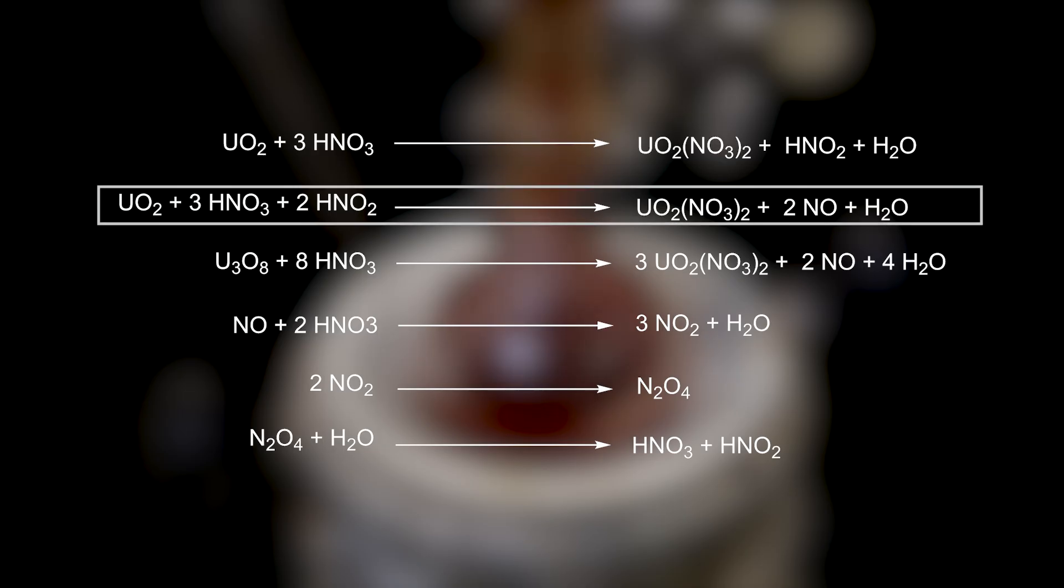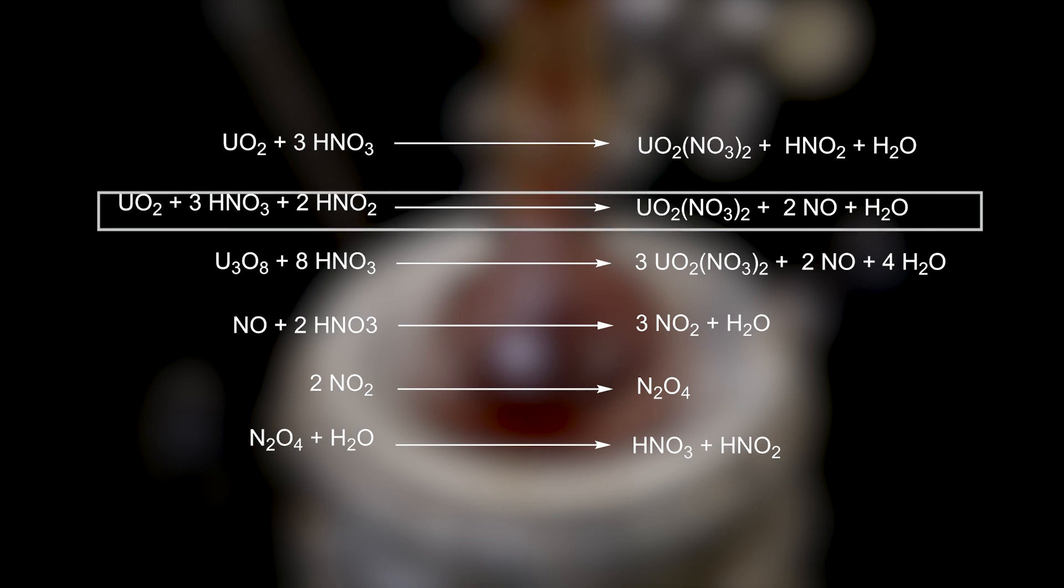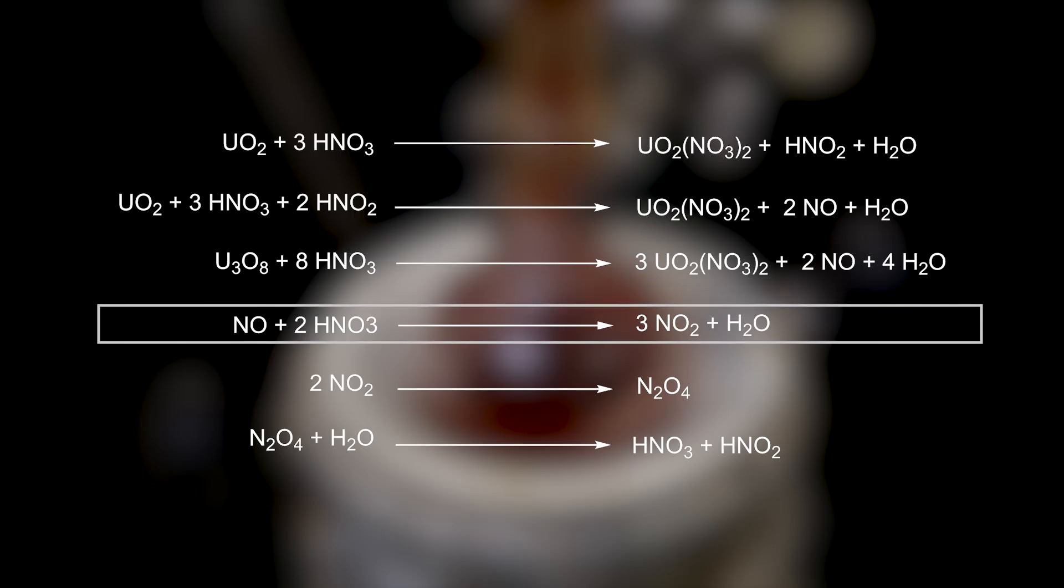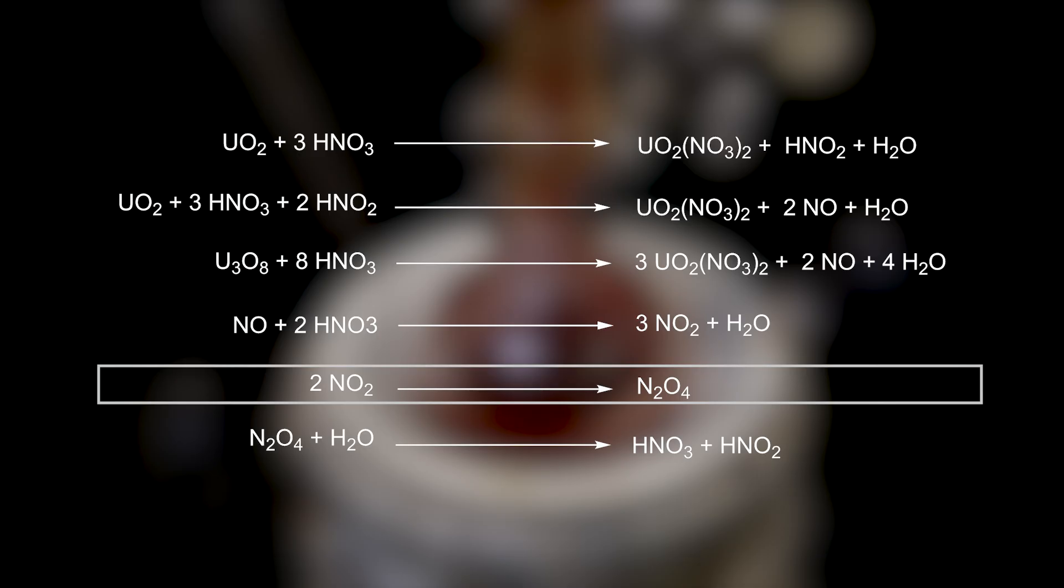This nitrous acid can react with more uranium dioxide together with more nitric acid to form uranyl nitrate, nitrogen monoxide, and water. Any tri-uranium tetroxide that is present can also react with nitric acid to form uranyl nitrate, nitrogen monoxide, and water. The nitrogen monoxide in solution can react with nitric acid to form nitrogen dioxide and water, which we see coming off as the brown red fumes and red color of the solution. Nitrogen monoxide can also react with oxygen to form nitrogen dioxide. Nitrogen dioxide is in equilibrium with dinitrogen tetroxide, which can react with water to form nitric acid and nitrous acid, which can continue to react with more uranium dioxide.